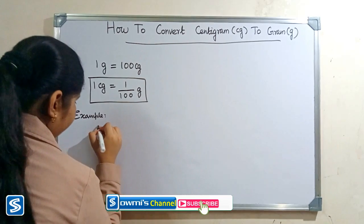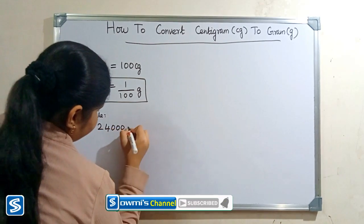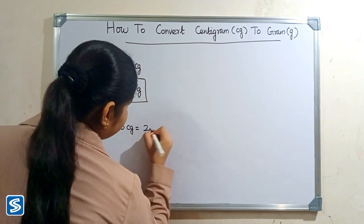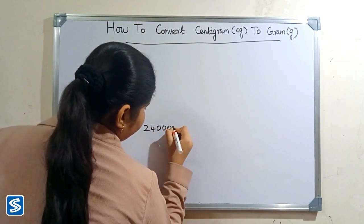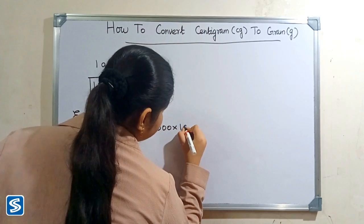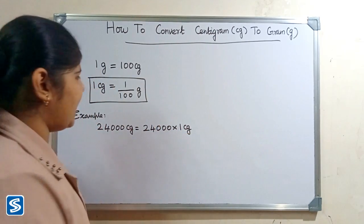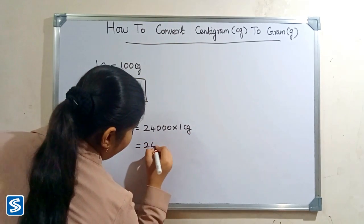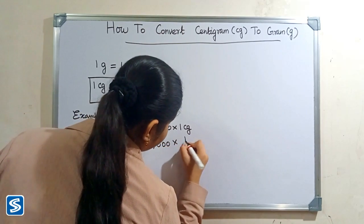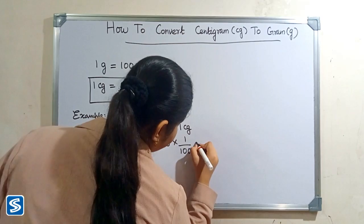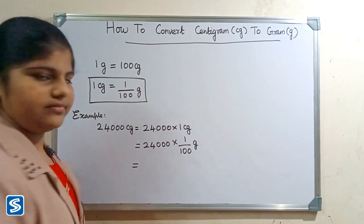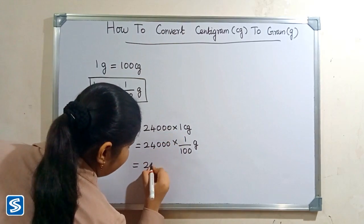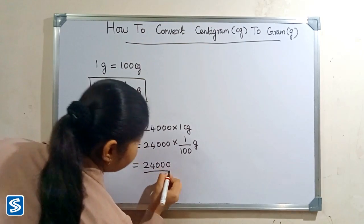For example, we can take 24,000 centigrams. 24,000 centigrams can be written as 24,000 multiplied by one centigram. Now we have to substitute one by 100 grams in place of one centigram, so 24,000 multiply one by 100 grams.